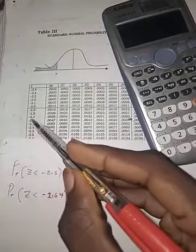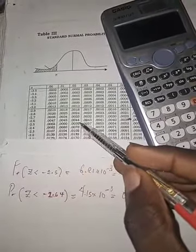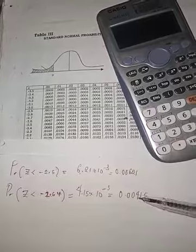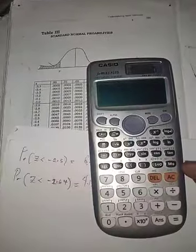Minus 2.6 under 4 is 0.0041, so approximately that is 0.0042. That is how to make use of the calculator. Thank you very much.